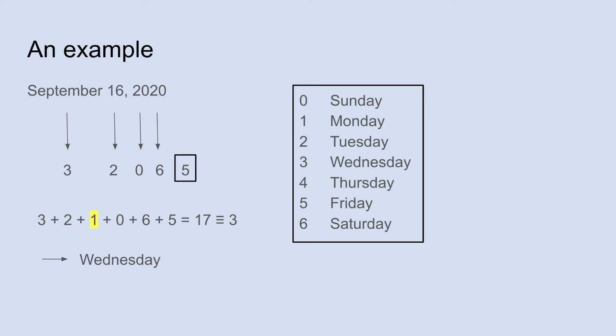So we have 3 plus 2 plus 1 plus 6 plus 5, which gives us 17. The final step is to find 17 mod 7. Since 17 is 3 more than 14, 17 mod 7 is 3. Looking at the list: 0 is Sunday, 1 is Monday, etc. A 3 corresponds to Wednesday. And sure enough, September 16, 2020 was a Wednesday.